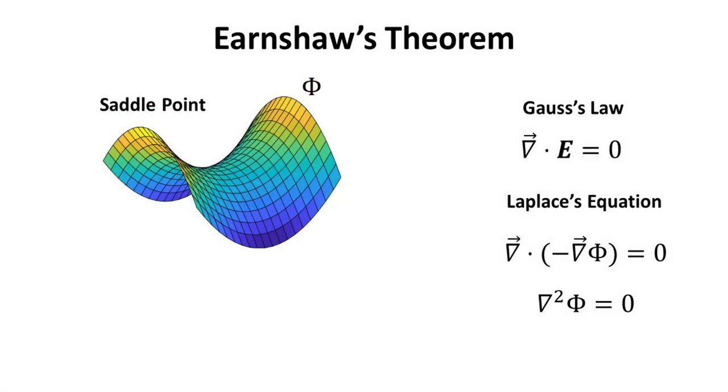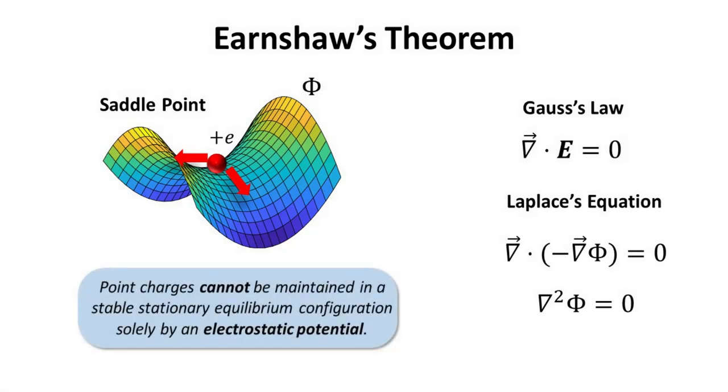In other words, a potential that obeys Laplace's equation only allows at most saddle points, where the second derivatives have opposite signs in the perpendicular directions. Such a saddle potential will not be able to trap an electric charge. This is the intuition behind Earnshaw's Theorem, which states that point charges cannot be maintained in stable stationary equilibrium configuration solely with an electrostatic potential.